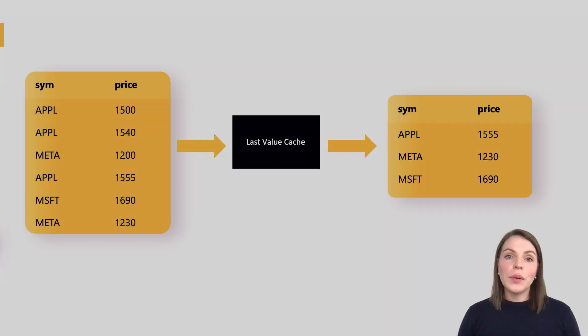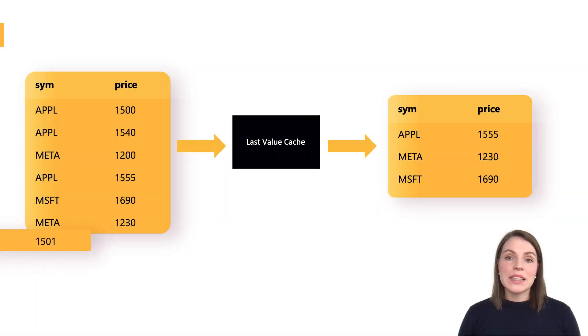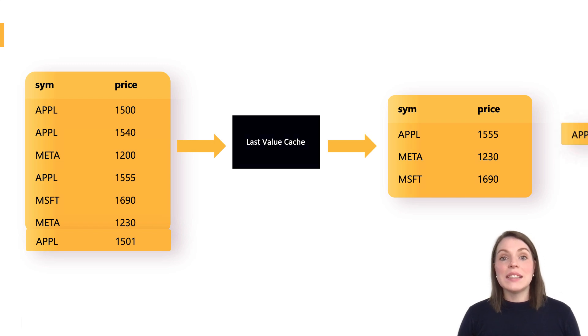Now like the RDB, this last value cache subscribes to the ticker plant for updates. But rather than merely adding a new row in its own tables each time it receives an update, it adds received data into a keyed table, overriding the previous value for that key. In a finance setting, this might allow a client process to see the last trade for each symbol much quicker than connecting to the RDB and doing a select statement to get this information.